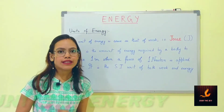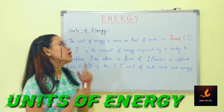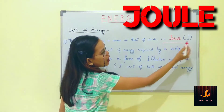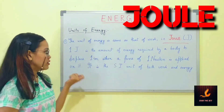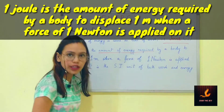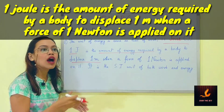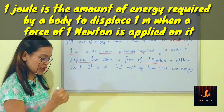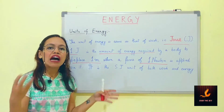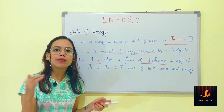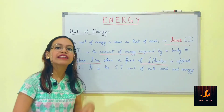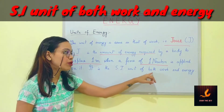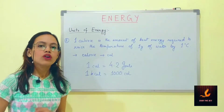So what are the units used to calculate the amount of energy? The unit of energy is exactly the same as that of work, which is joule. What is one joule? One joule is the amount of energy required by a body to have a displacement of one meter when a force of one newton is applied on it. That energy is one joule and it is also the SI unit — System International unit — for both work and energy.